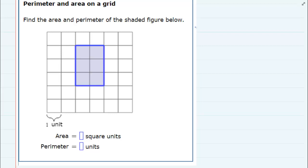We're asked to find the area and perimeter of this shaded figure, and starting with the area, since this figure is a rectangle, then the formula that we use is length times width.